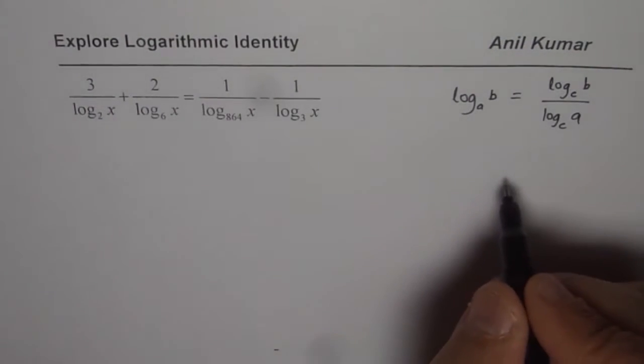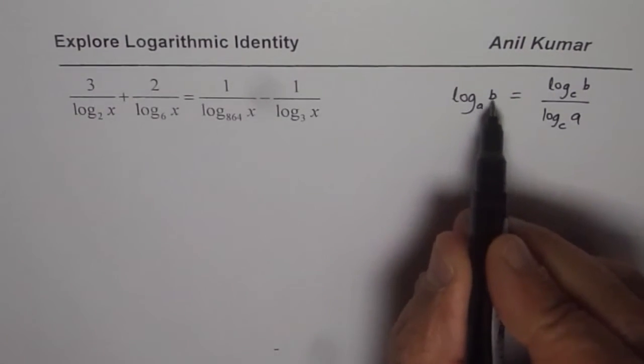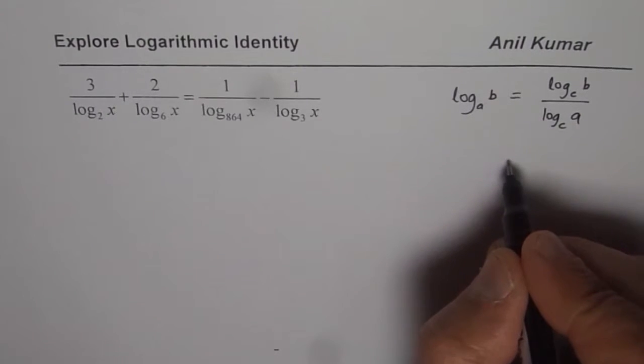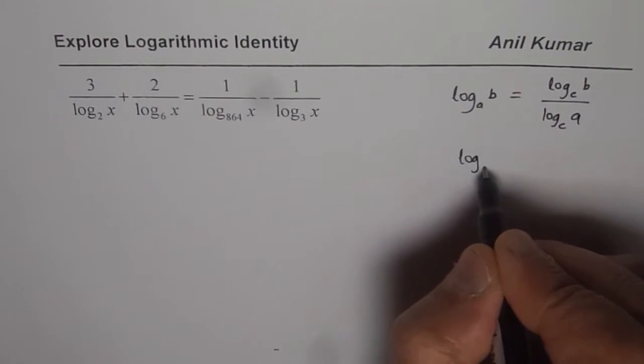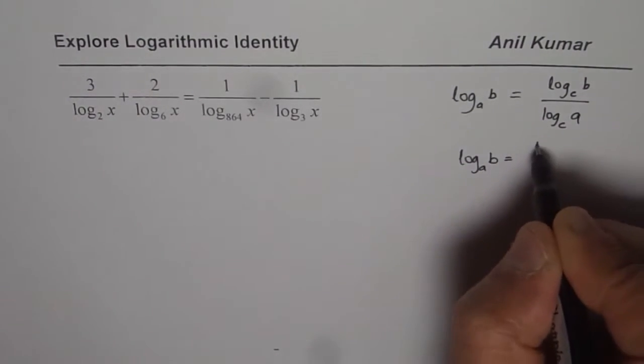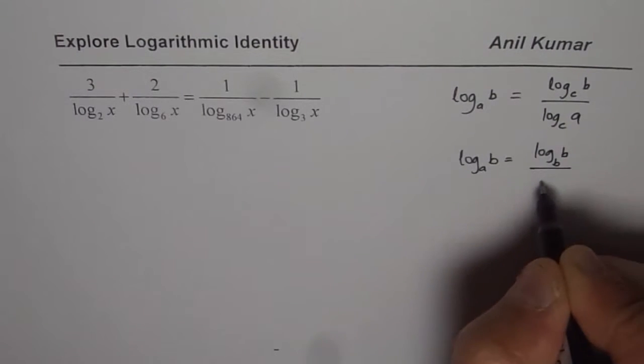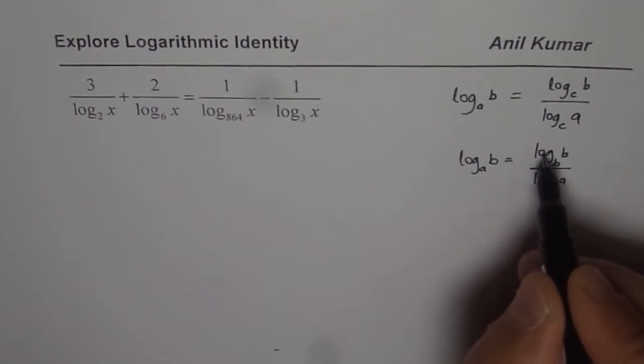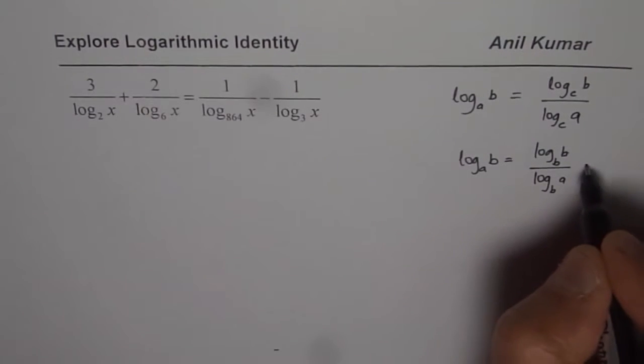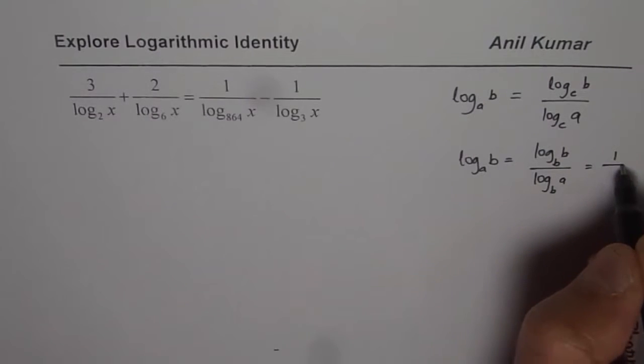Now important thing here is that I could have changed the base to B also. In that case I could have written log to the base A of B as 1 divided by log to the base B of A. Now what is log to the base B of B? It is 1. So it is 1 over log to the base B of A.